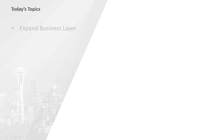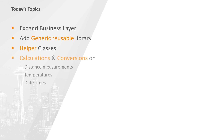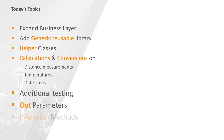On today's topics, we'll further expand upon our business layer and we'll add a generic library that can be reused in other projects. Within it, we'll set up some helper classes which we'll use to perform conversions on temperatures, distances and datetimes. While we're doing this, we'll continue writing tests for each new feature — TDD and all that. We will briefly discuss OUT parameters, and lastly, we'll take some time to discuss the merits of extension methods.